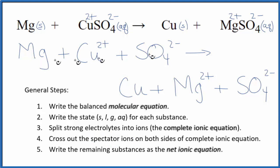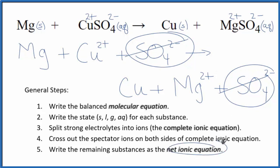As I look for something that's the same in the reactants and the products, the only thing I see is this sulfate ion here. So, I'm going to cross that out, and that'll leave us with our net ionic equation for Mg plus CuSO4.